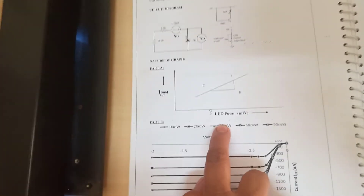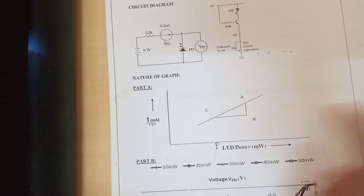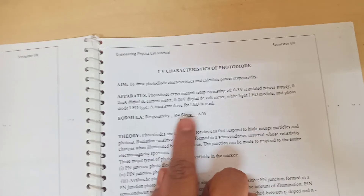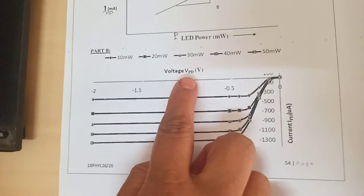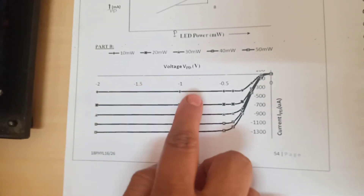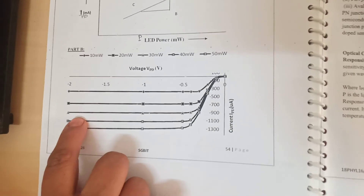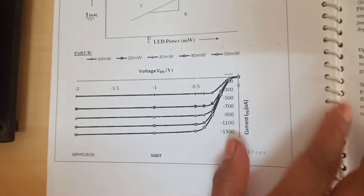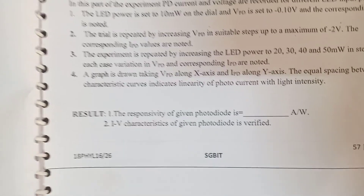After getting the values, plot the graph of IPD versus PLED. That graph will give you a straight line and its slope will give you the responsivity: R equals slope divided by 0.66. For the second table, plot VPD versus IPD — that will give you the characteristics. Each line will be for one constant value of PLED: 10 milliwatt, 20 milliwatt, 30 milliwatt. That will be the characteristic of the photodiode. The result will be the responsivity of the given photodiode and the IV characteristics of the given photodiode are verified.